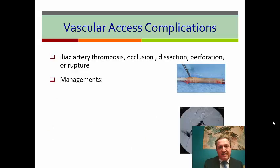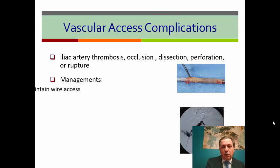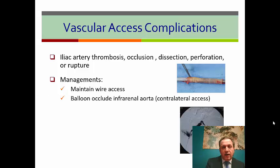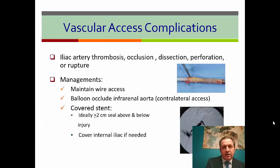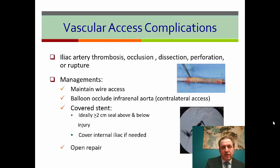What about vascular access complications? The most common complications are thrombosis, occlusion, dissection, perforation, or rupture. Management: first, don't panic — the most important thing is to keep wire access, which is your lifesaver. Balloon-occlude in front of the injury from the contralateral access. Then use a covered stent, but you need at least a 2 cm sealing zone. Don't worry about the internal iliac artery if you need a good sealing zone. And of course, if you cannot do any of the above, then emergency open repair.